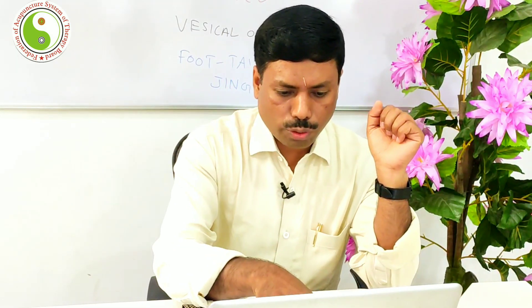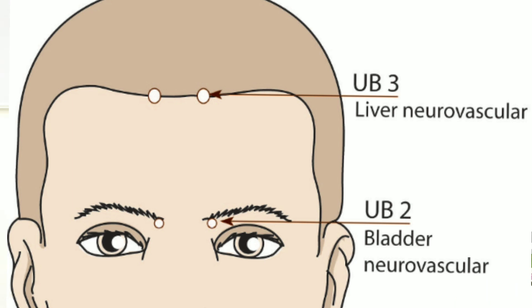UB3 is 0.5 cun above and 0.5 cun away from the midline of the anterior hairline. The anterior hairline is three cun proximal from the glabella — the midpoint of the eyebrows — where four fingers placed from the eyebrow end, that is the anterior hairline. The point is vertically above UB2.